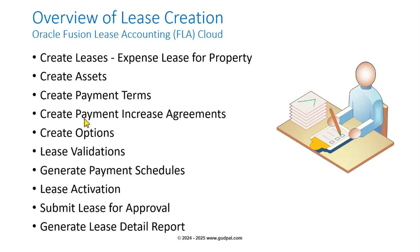So basically, if the property lease rent is say $15,000 per month, and initially the lease is created for two years at a fixed rent of $15,000, but after two years if there is an increase for another term, then what will be the percentage of that increase — that's what you define here. Then you create the options and then validate the lease.